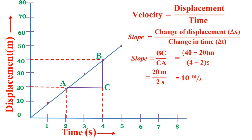This slope also represents the velocity of that body. So if we are given a displacement-time graph of a body moving with uniform velocity, by selecting two points from that graph we can calculate the velocity of that body from the displacement-time graph.